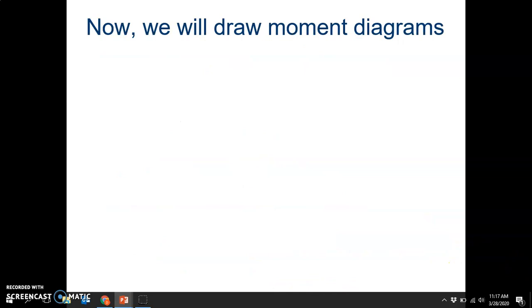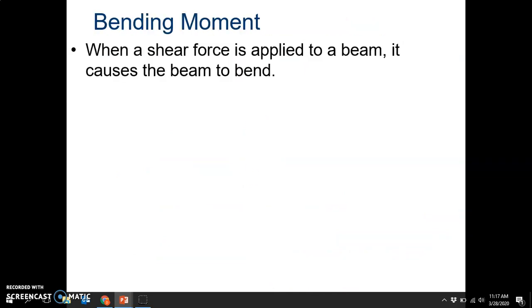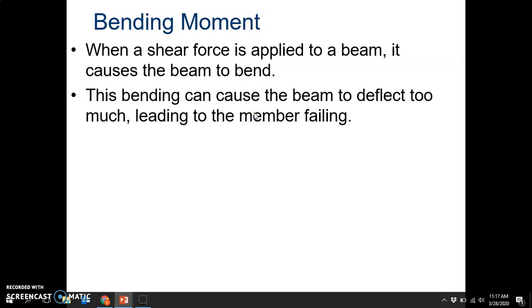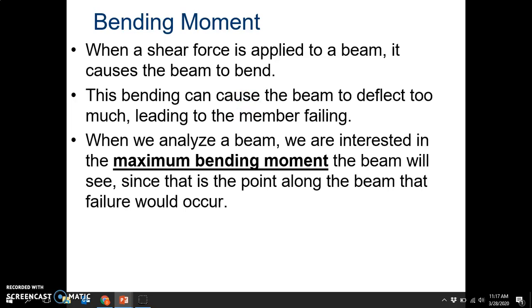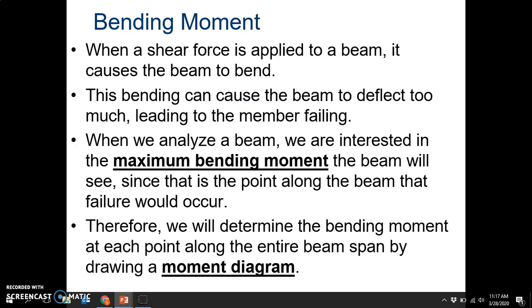So now we're going to draw moment diagrams. Bending moment is the result of a shear force which causes the beam to bend, and this bending can cause the beam to deflect too much, leading to the member failing. When we analyze a beam, we are interested in the maximum bending moment the beam will see, since if the beam does fail, it'll fail first at the maximum. It won't fail where there's less force applied; it'll fail where the most force is applied. Therefore, we will determine the bending moment at each point along the beam span by drawing a moment diagram.